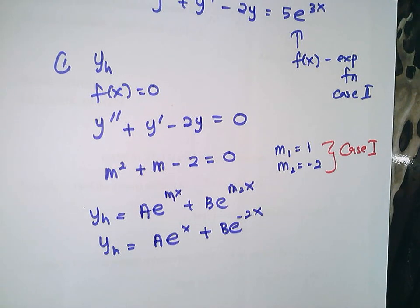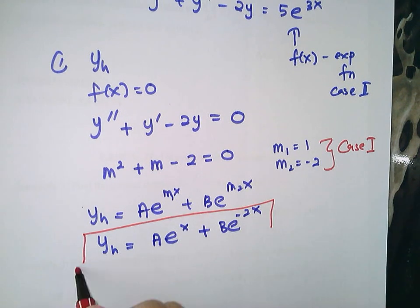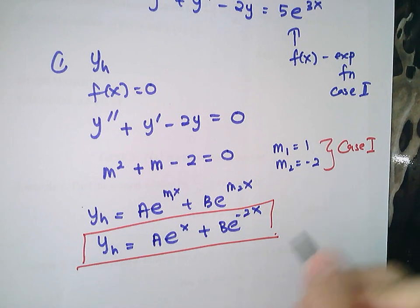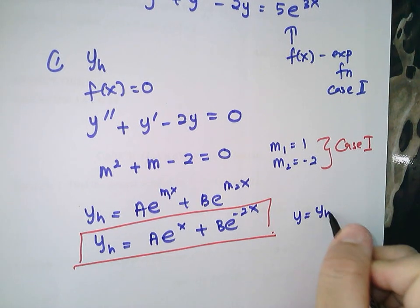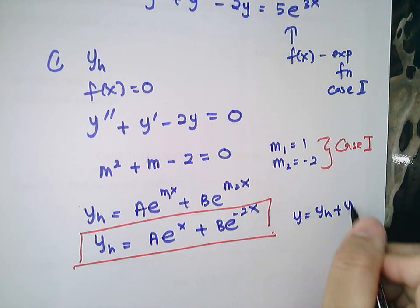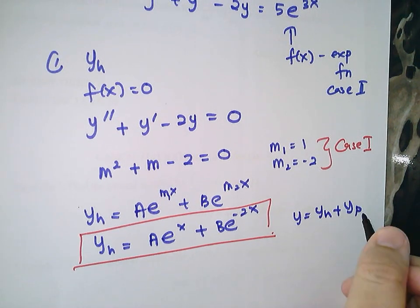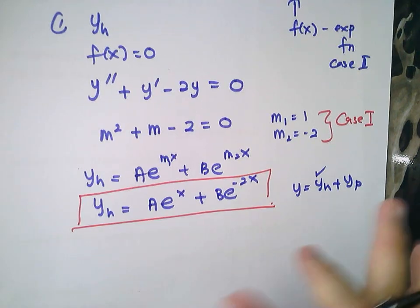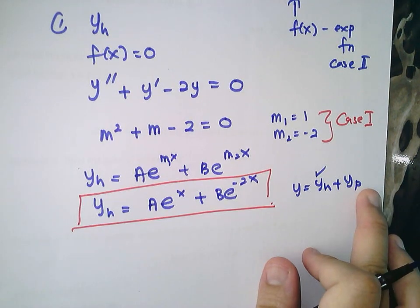Now you already have your yh. Remember, when solving a non-homogeneous equation, your general solution is y = yh + yp. You are already settled with yh, so next you are going to find your yp.